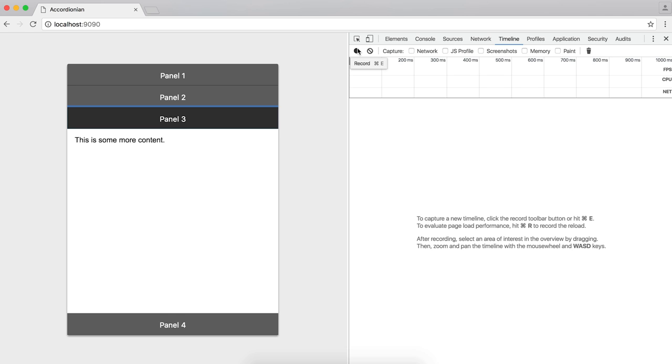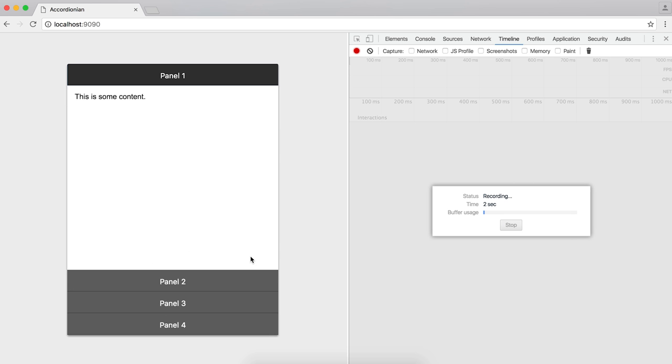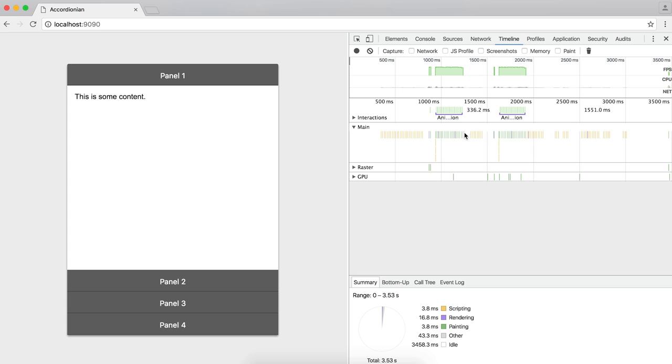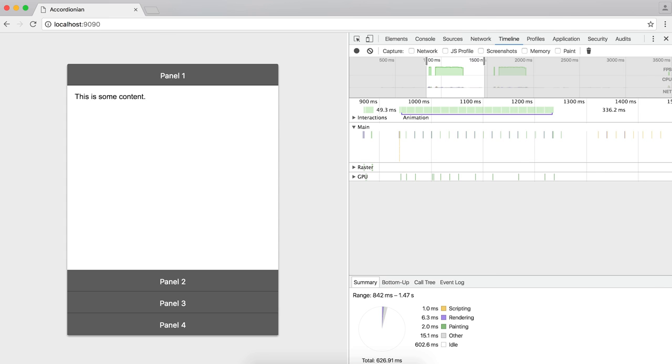Let's also look at the performance side. I've got the timeline here in DevTools open. If I click around these panels, you'll see that each one of those clicks, there's an animation. And if we zoom in, it's a comfortable 60 frames a second, lovely and green, no red markers there, working really well.